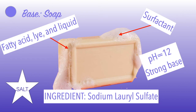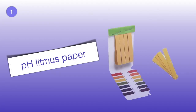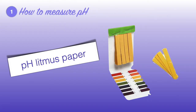You're probably wondering how can you measure pH. There are two methods we will discuss. The first way is by using pH litmus paper. Litmus is a water-soluble mixture of different dyes extracted from lichens. Litmus paper absorbs the liquid substance and then changes colors, indicating whether the substance is acidic or basic.